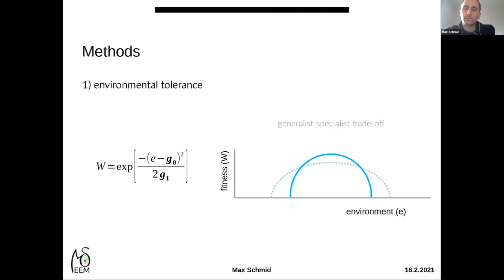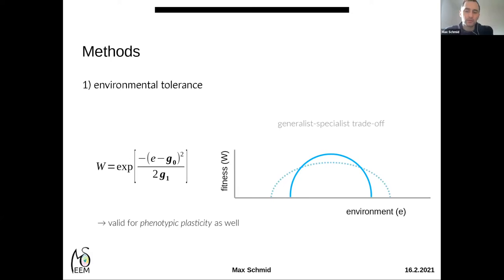On top of that, we installed a generalist-specialist trade-off, so that evolving a broader tolerance came at the cost of lower maximum fitness — a constraint to avoid the evolution of endless tolerance in our simulations. We also simulated the evolution of phenotypic plasticity in parallel, as this is a specific mechanism to achieve environmental tolerance. I'll stick to the evolution of tolerance curves for now, but you can broadly exchange broader tolerance with higher plasticity if you wish.